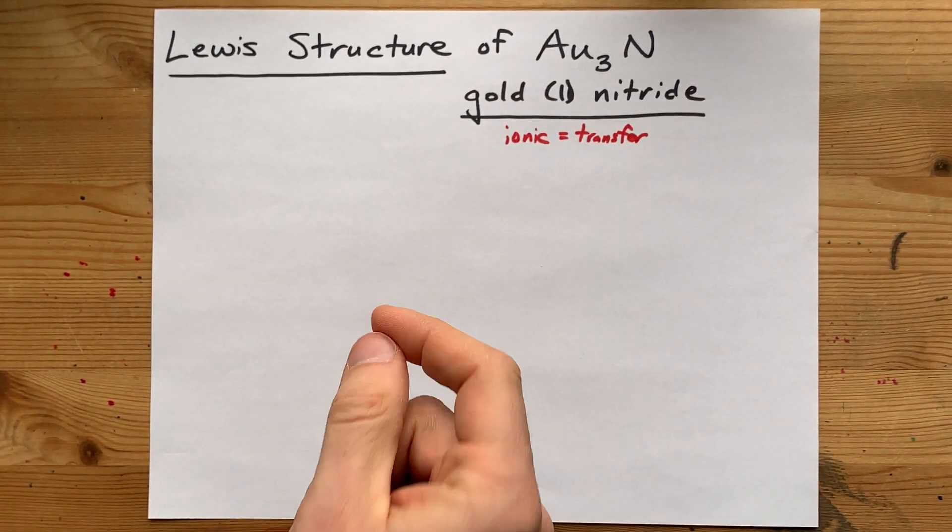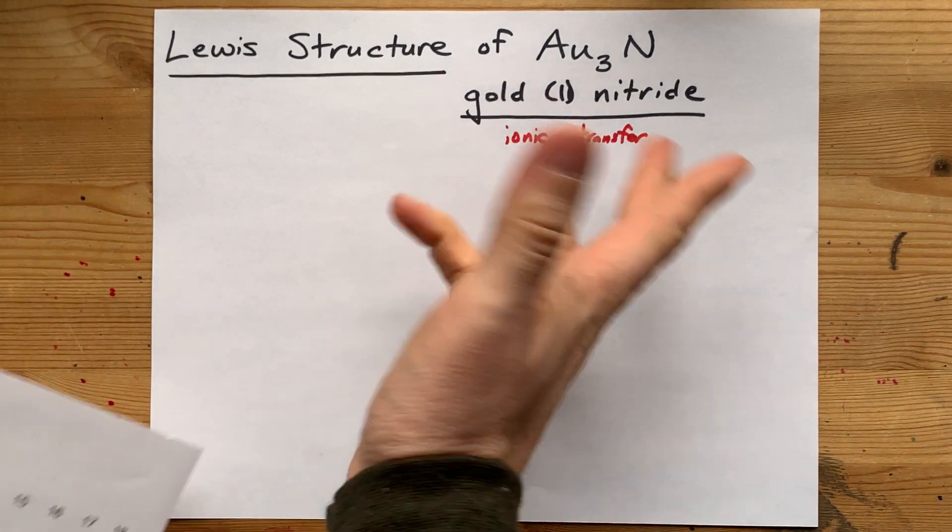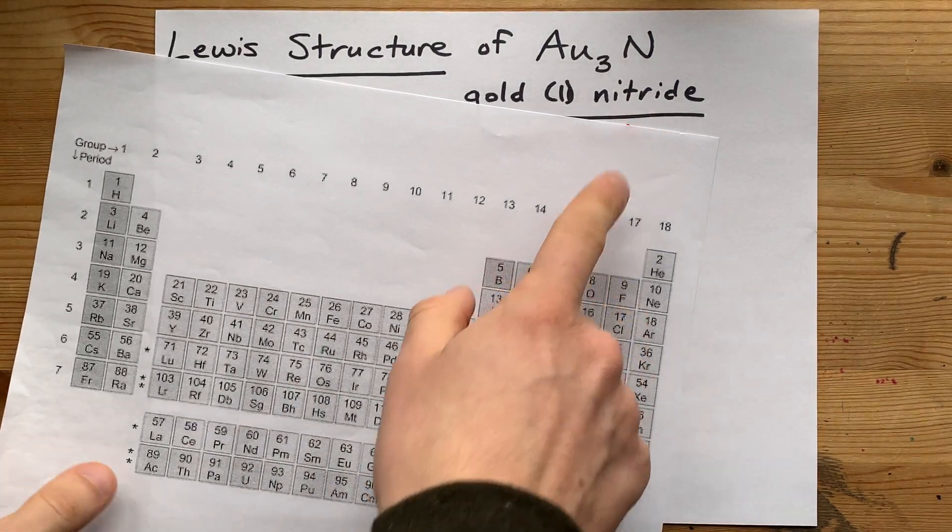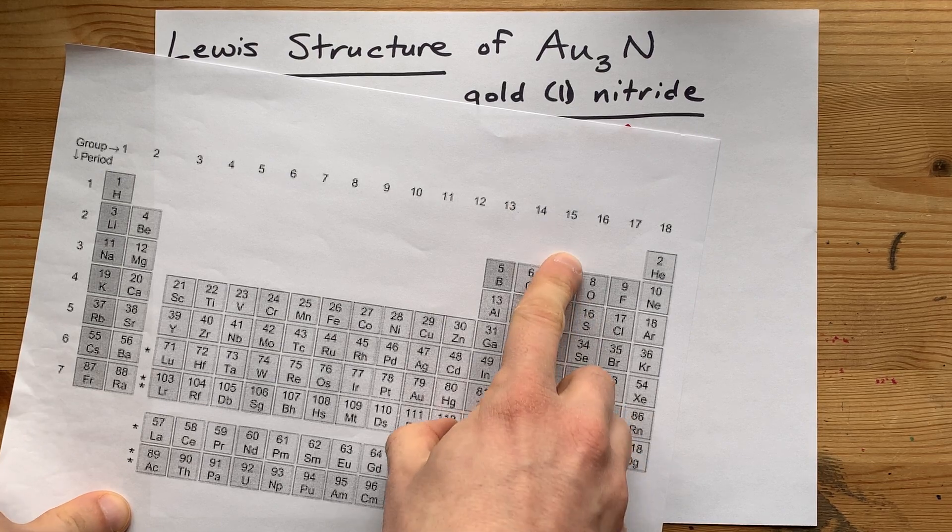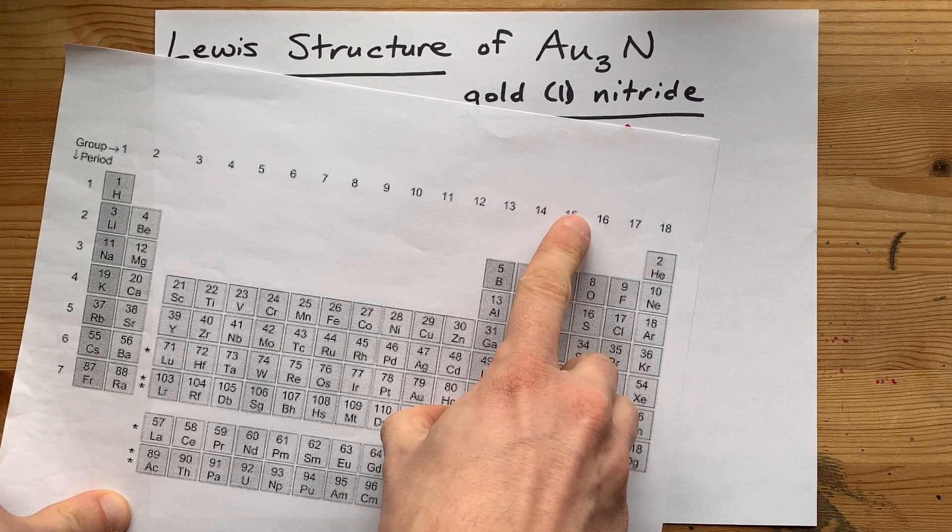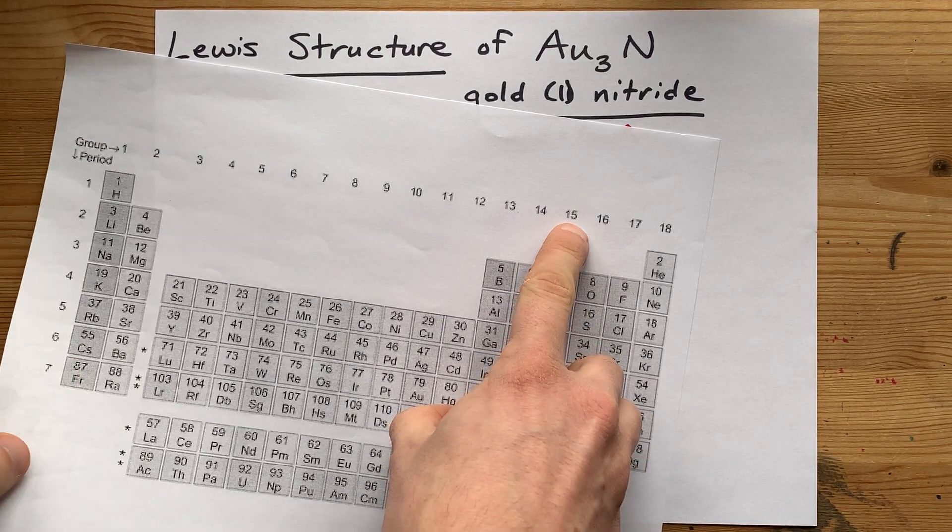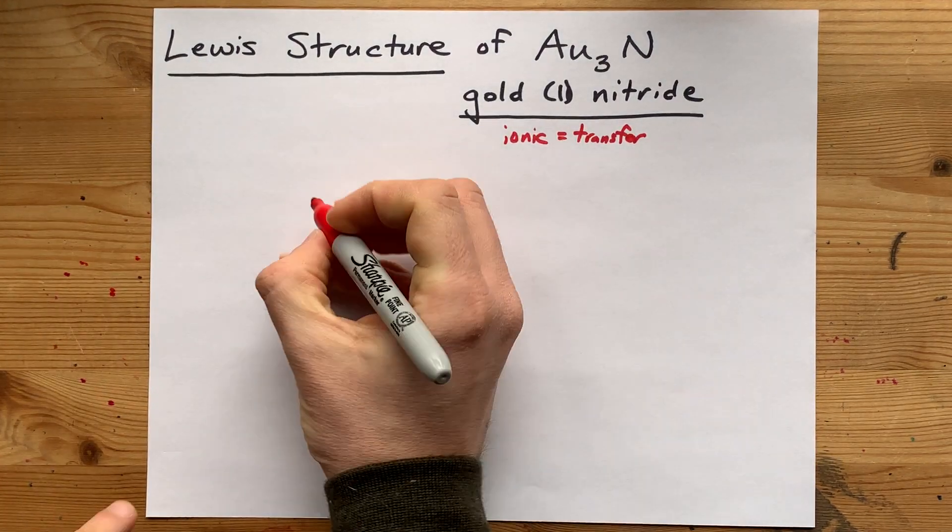Now you have to decide how many valence electrons each of these atoms brings with it. For non-metals, it's easy. Nitrogen in group 15 brings five valence electrons with it. So I can do that now.